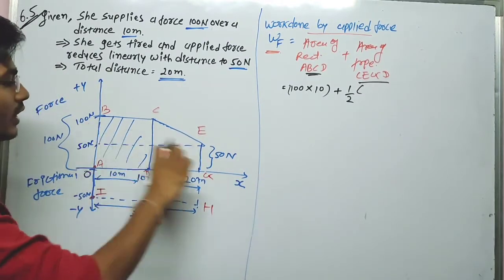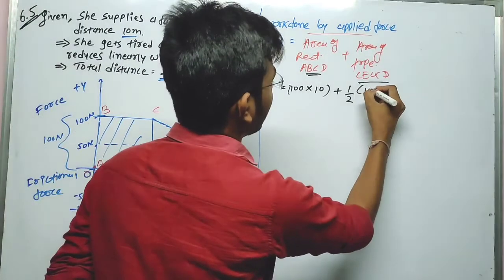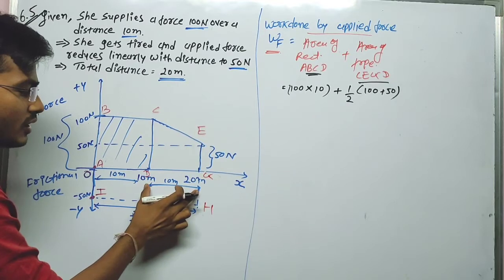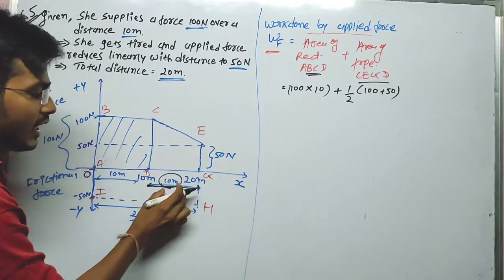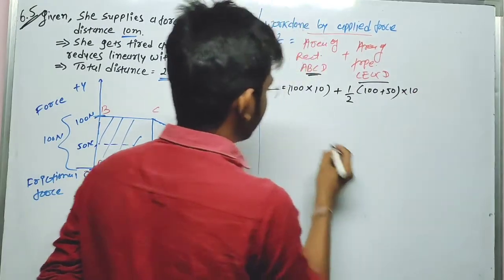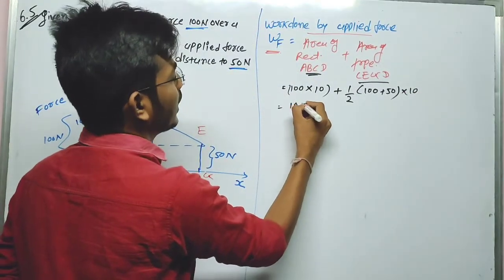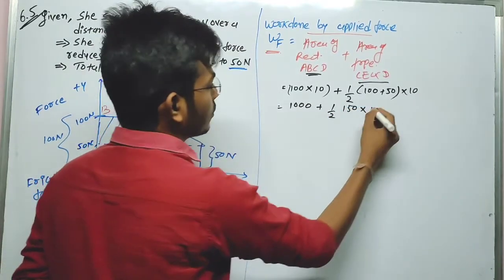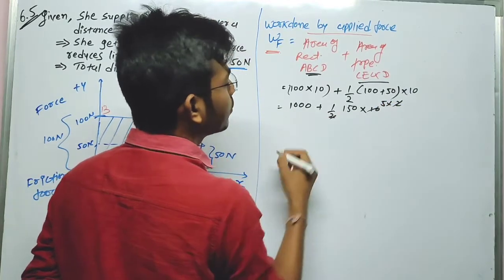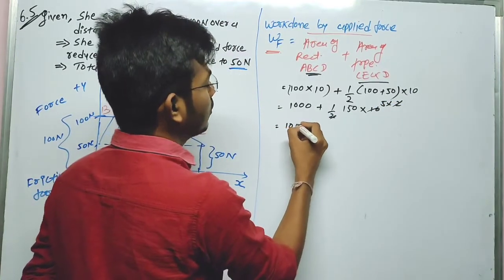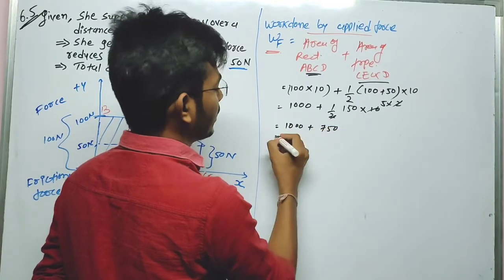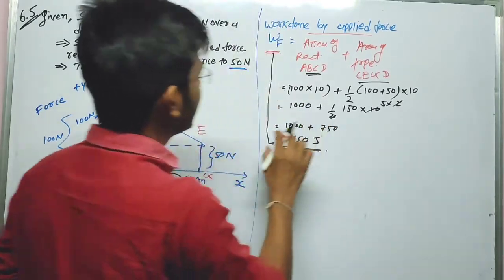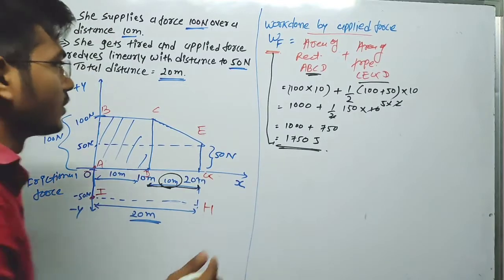Area of rectangle ABCD is 100 Newton times 10 meter = 1000 J. Area of trapezium CEGD is (1/2) × (100 + 50) × 10 = 750 J. Therefore, total work done by the applied force = 1000 + 750 = 1750 Joule.